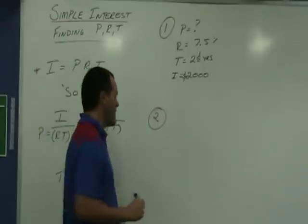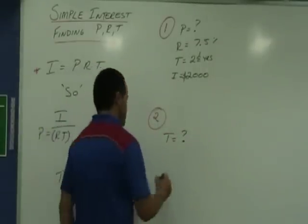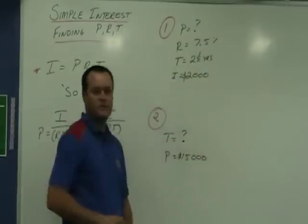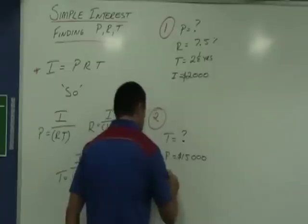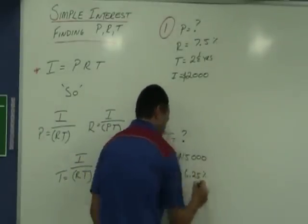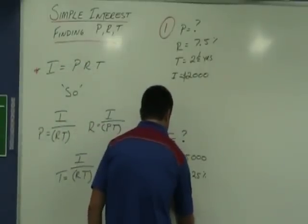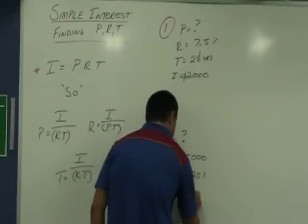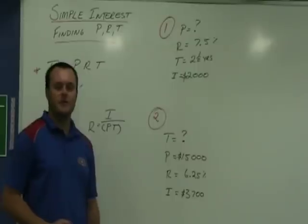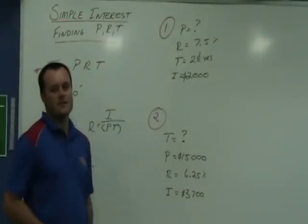The next one, let's find time again. How long is it going to be invested? We're going to invest $15,000 at 6.25%. And we're going to earn $3,700 of interest. Go away and have a go at those two. Join us after the break. We'll go through the answers.